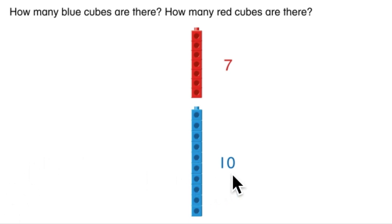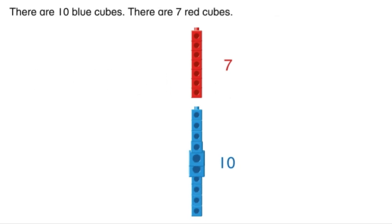Well, they already wrote the number for us, but can you tell me what you would do if you needed to figure out how many of each color? You're right. You could count each group of cubes. You would find out there are 10 blue and seven red. There are 10 blue cubes. There are seven red cubes.